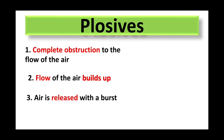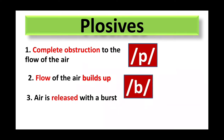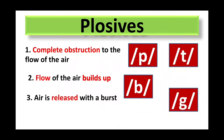Let's pronounce these sounds together and observe these steps. Number one: complete obstruction to the flow of air — you will feel complete closure. Second step: flow of air builds up. Then first obstruction, then air is released with a burst and the sound is created. Again — obstruction, flow is built up, and air is released. In this way, when we pronounce these plosives, these three steps are followed.